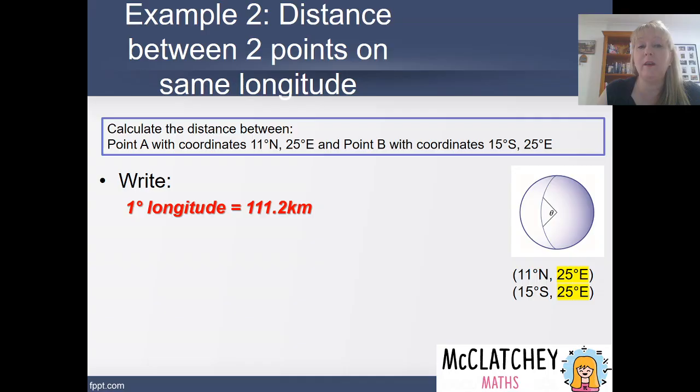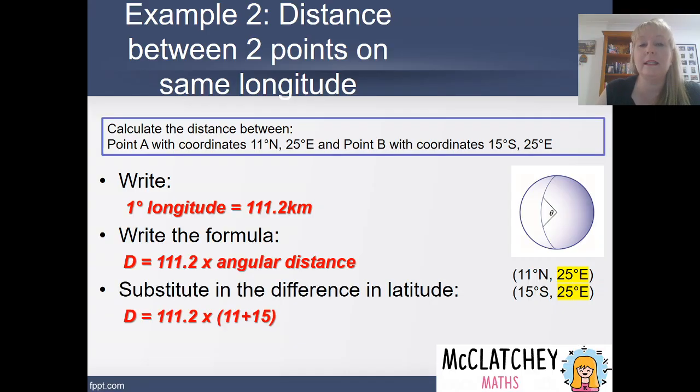So firstly, we're going to write our little rule again, one degree of longitude equals 111.2 kilometres, and then substitute it into our formula, d equals 111.2 times the angular distance.